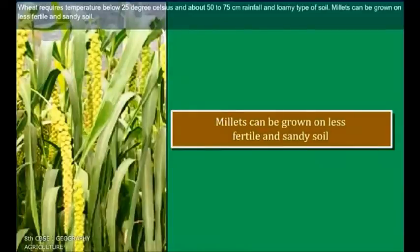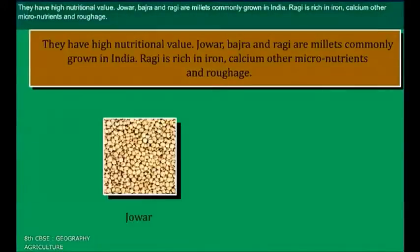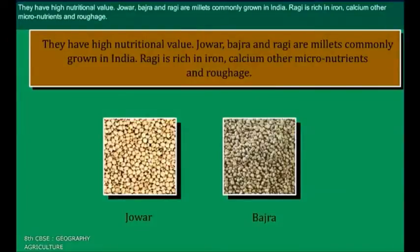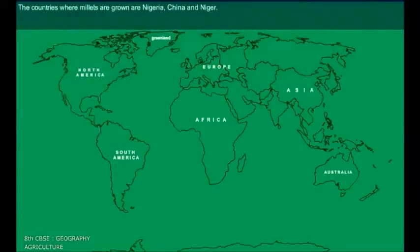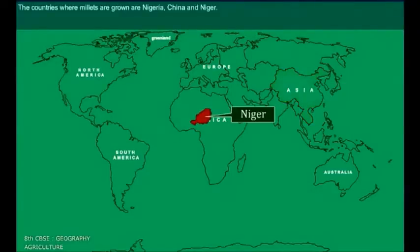Millets can be grown on less fertile and sandy soil. They have high nutritional value. Jawar, bajra and ragi are millets commonly grown in India. Ragi is rich in iron, calcium, other micronutrients and roughage. The countries where millets are grown include Nigeria, China and Niger.